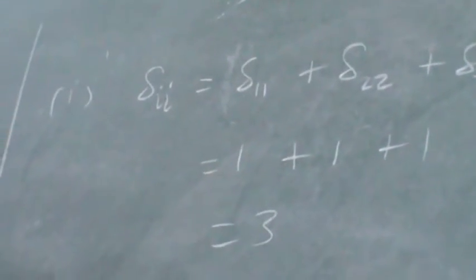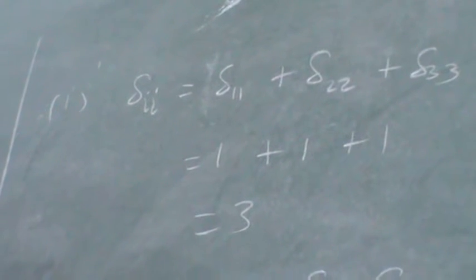So this is minus Delta i j k, Epsilon i j k. So this is Delta i j k, Delta i j, Epsilon i j k.